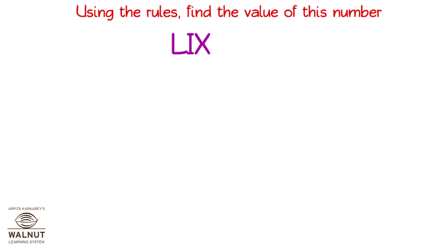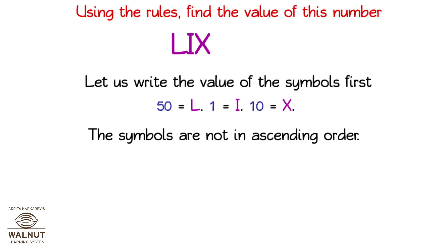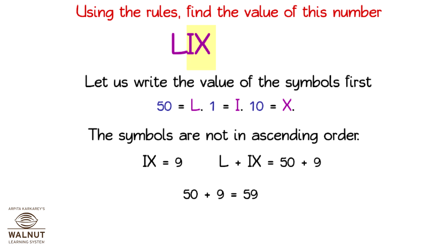L, I and X. Let us write the value of these symbols first. 50 is L, 1 is I and 10 is X. The symbols are not in ascending order. I and X is 9. L plus IX is 50 plus 9. 50 plus 9 is equal to 59. So L, I and X is equal to 59.